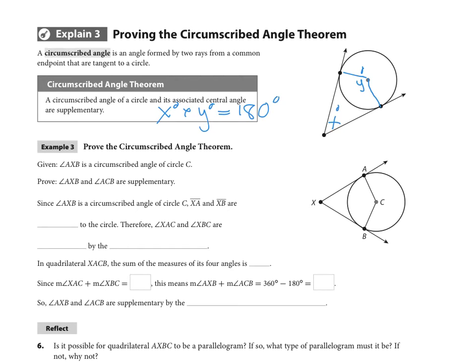So here's the proof. First off, since angle AXB is a circumscribed angle of circle C, we know that segments XA and XB are, by definition, circumscribed angles are made up of tangents, so they are tangent to the circle.